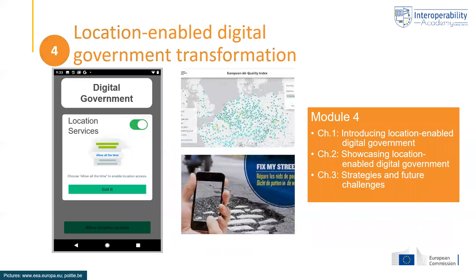Module four, the fourth core module, is about location-enabled digital government transformation. It has three chapters: one introducing what location-enabled digital government is about, a second chapter with two in-depth examples of what location-enabled government is and how the transformation towards it takes place, and a third chapter that looks at strategies and future challenges.